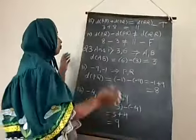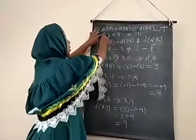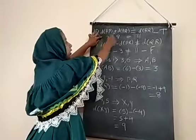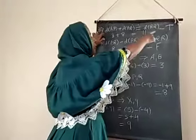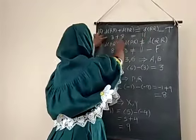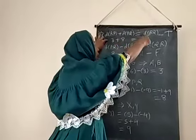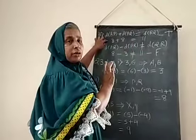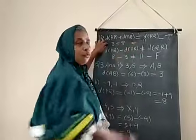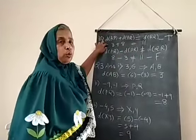In the third statement, distance RP and distance PQ are added: three plus eight equals eleven. Distance RQ is also eleven, so both sides are equal — therefore the third statement is true.